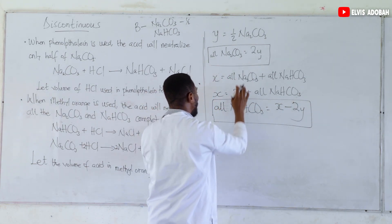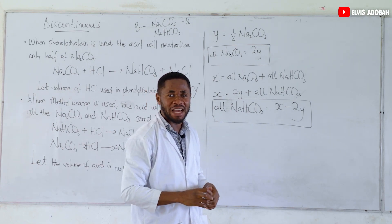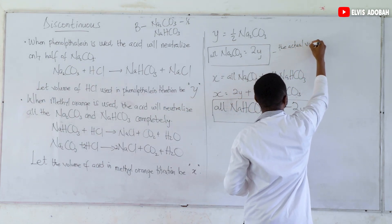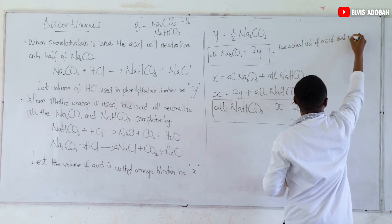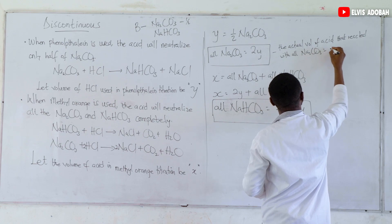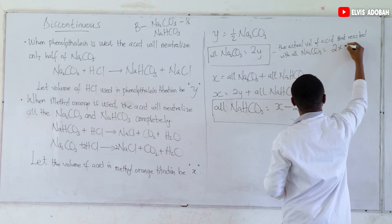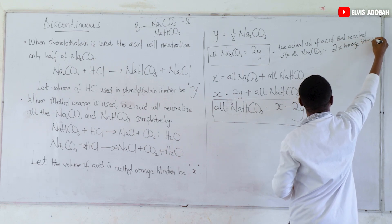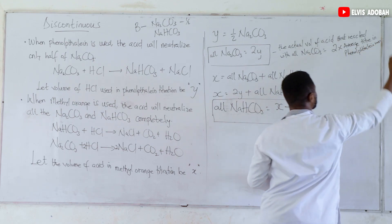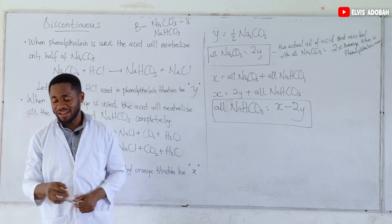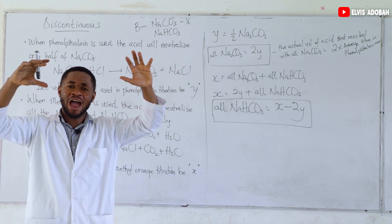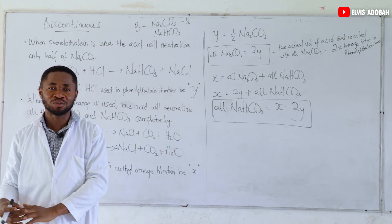These are our two key points. The actual volume of acid that reacted with all sodium carbonate is given as 2 times the average titer in the phenolphthalein titration. Remember, in that titration we developed two tables, and for the phenolphthalein titration we had an average titer of 4.85 cm³. To find the volume of acid that reacted with all the sodium carbonate, multiply 2 by 4.85.